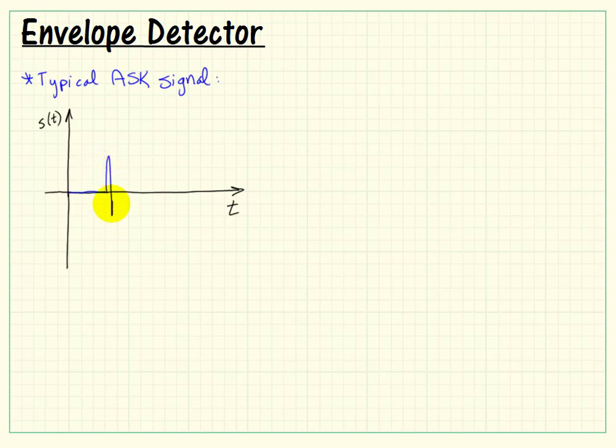We have either the signal looking like zero, or we allow the carrier sinusoid to get through, or zero, or carrier comes through. So amplitude shift keying is a pretty simple type of signal to explore here.